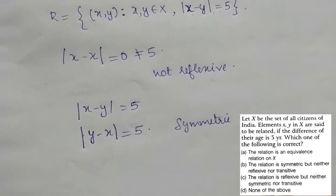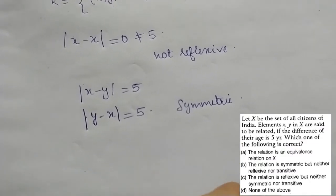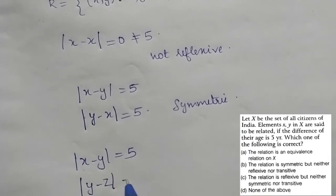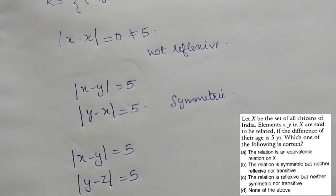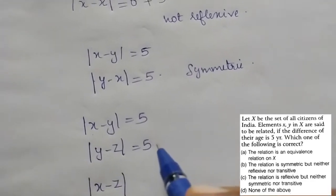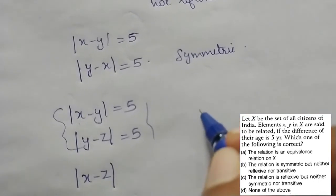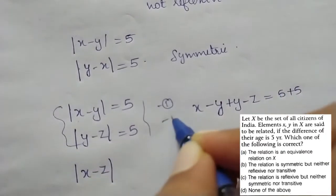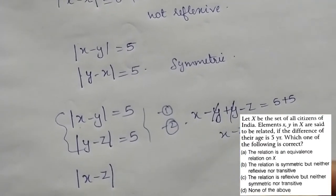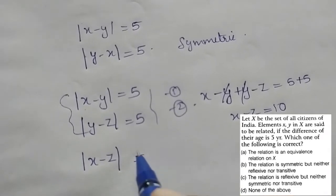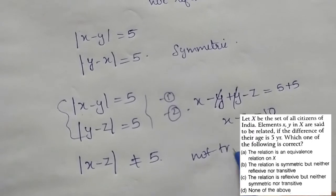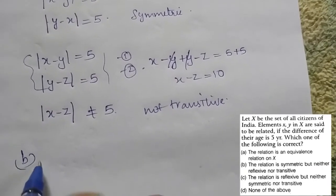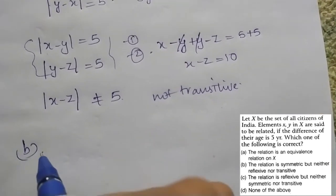Next, for transitivity: if |x − y| = 5 and |y − z| = 5, adding the two equations gives |x − z| ≤ 10. So |x − z| is not necessarily equal to 5 — that is not transitive. Option B says the relation is symmetric but neither reflexive nor transitive. Option B is the right answer.